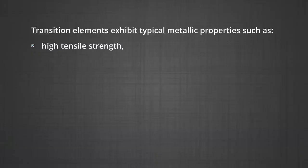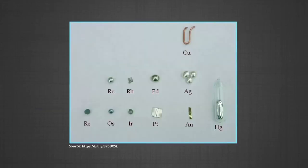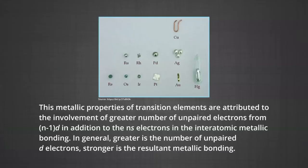The transition elements exhibit typical metallic properties such as high tensile strength, ductility, malleability, high thermal and electrical conductivity and metallic luster. These metallic properties are attributed to the involvement of a greater number of unpaired electrons from (N-1)D in addition to the NS electrons in interatomic metallic bonding.